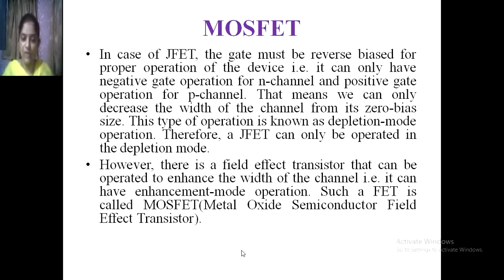Field Effect Transistors are categorized into two types: one is the JFET and another is the MOSFET. JFET operates under the depletion mode, while MOSFET operates under both depletion as well as enhancement mode. Let us see the types of MOSFET.